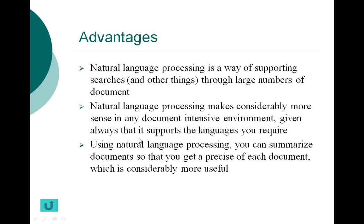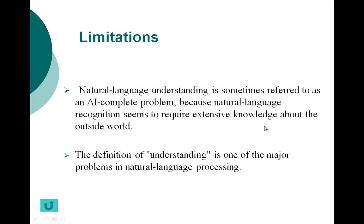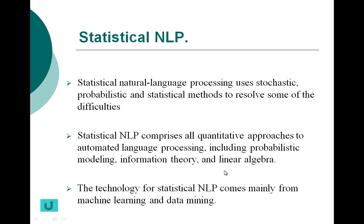In every system there are limitations, and NLP also has limitations such as the complexity of problems and the definition of understanding. The definition of understanding is one of the major problems in NLP. The solutions for these limitations are listed under statistical NLP, which comprises all quantitative approaches to automated language processing, including probabilistic modeling, information theory, and linear algebra. The technology for statistical NLP comes mainly from machine learning and data mining.